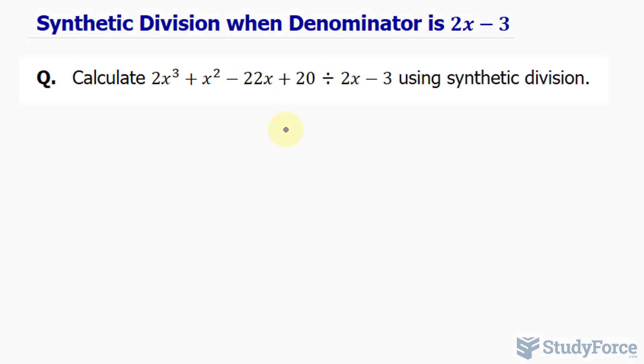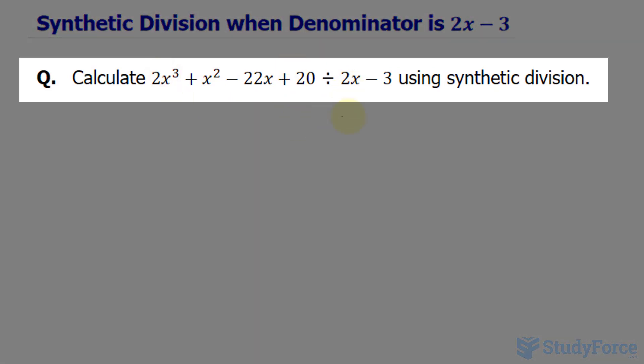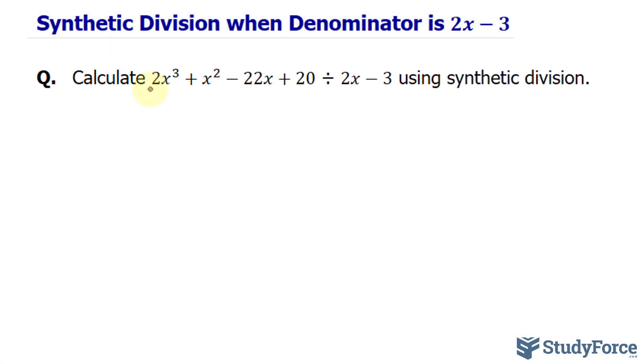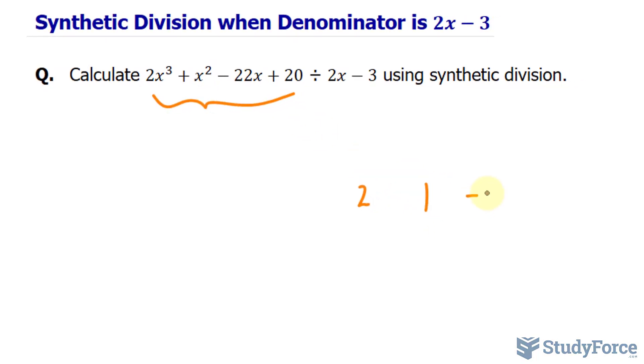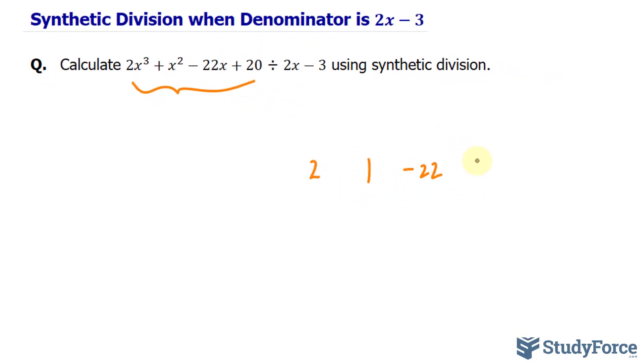That being said, we're expected to calculate this polynomial divided by 2x minus 3 using synthetic division. Let's begin by writing out the coefficients associated with each of these terms in this cubic expression. We have 2, the coefficient of this term is 1, the coefficient of that term is negative 22, and that constant is 20.